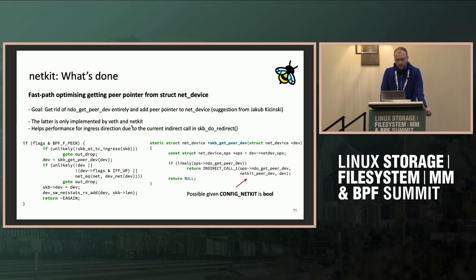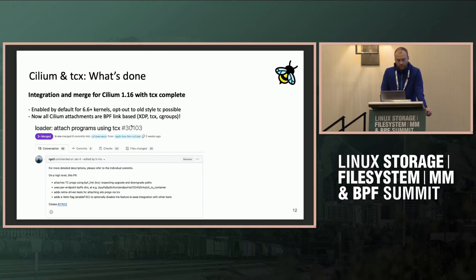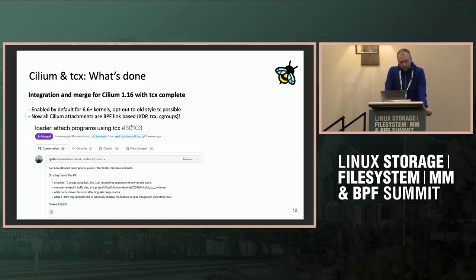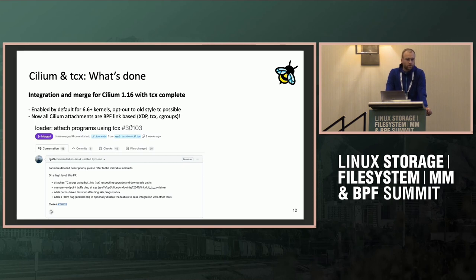For the Cilium integration: in the next release, Cilium 1.16, due around summer this year, the TCX side has been merged. For 6.6 kernels or newer this will be enabled by default, with an opt-out to still use legacy TC. With this, all Cilium attachments are now BPF link based — a milestone for robustness when third-party applications are also using those links. Specifically, that covers XDP, TCX, and the cgroup programs used for load balancing.